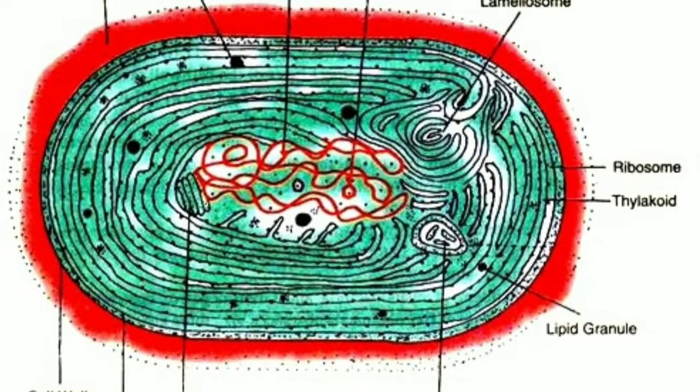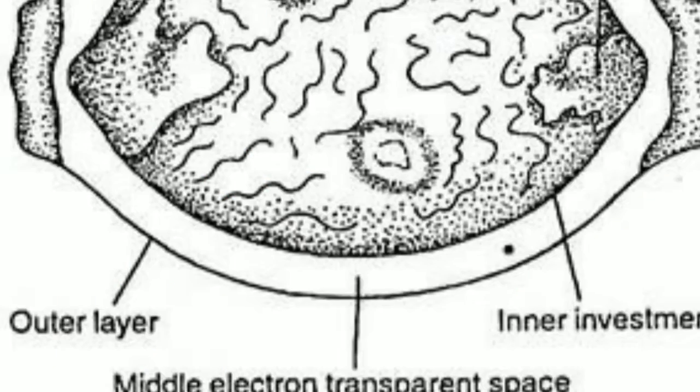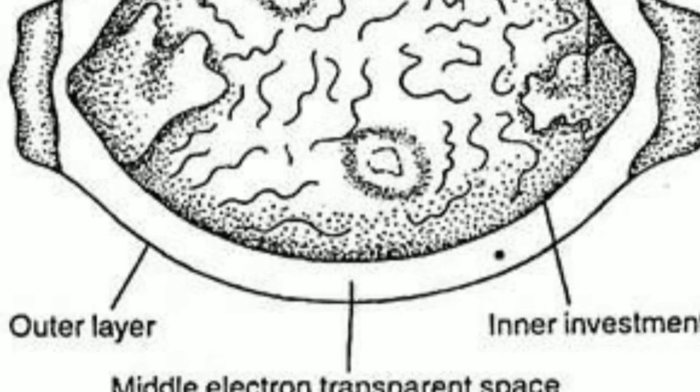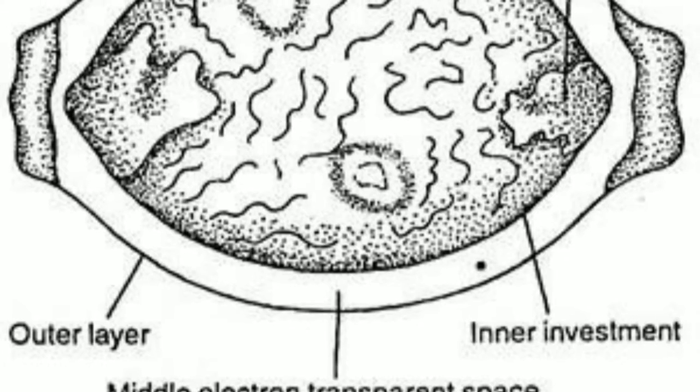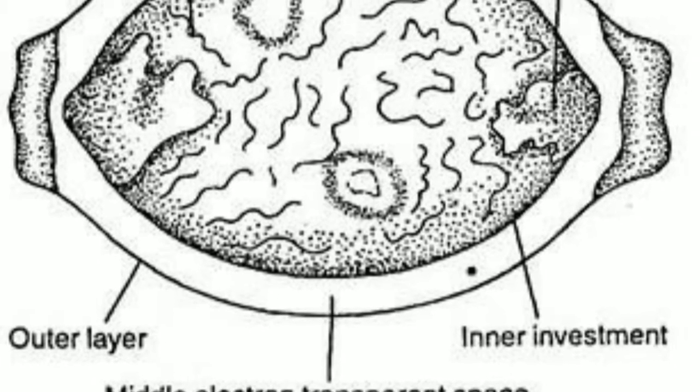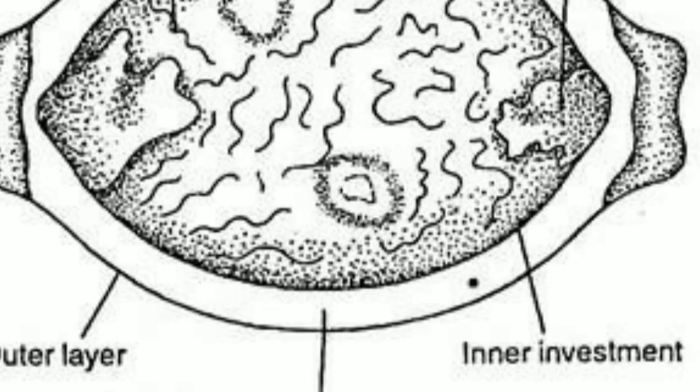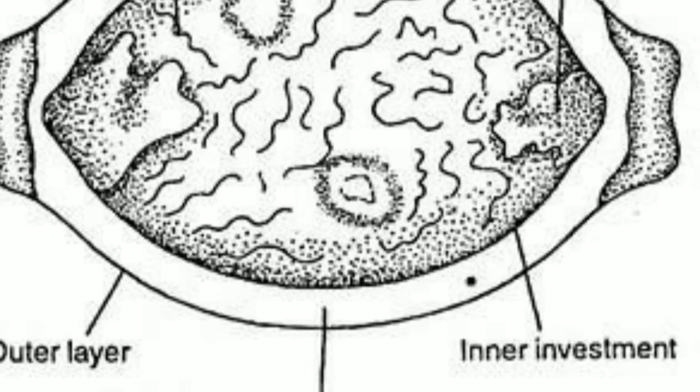Polyphosphate bodies also known as volutin granules. They are spherical, located near center of cell and they store phosphate and are found abundantly in mature cells which are grown in medium with high phosphate contents.